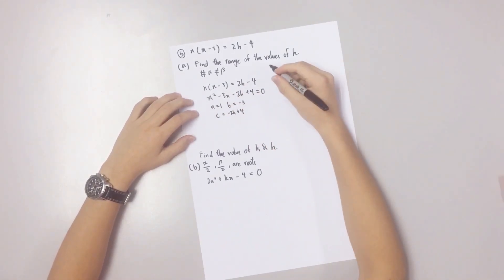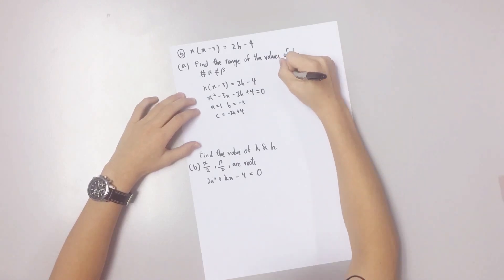Based on the question, the roots of the equation are different. Therefore, we can use the formula B squared minus 4AC is bigger than zero.